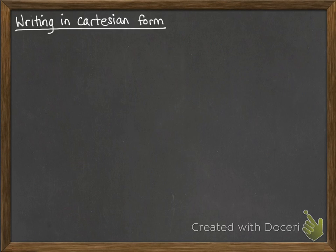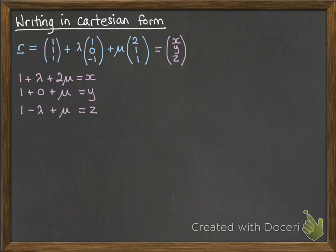Now if we want to write this in Cartesian form, we can take that equation we've just done, we set it equal to X and then make a system of simultaneous equations there. So we've got those three simultaneous equations, and we use them to eliminate the lambda and mu. So from equation one,